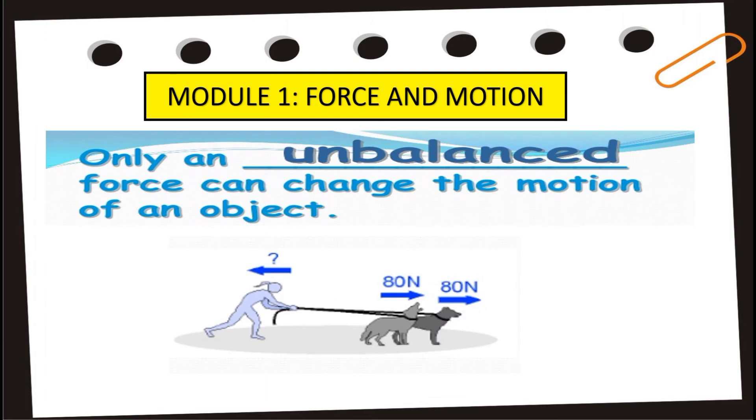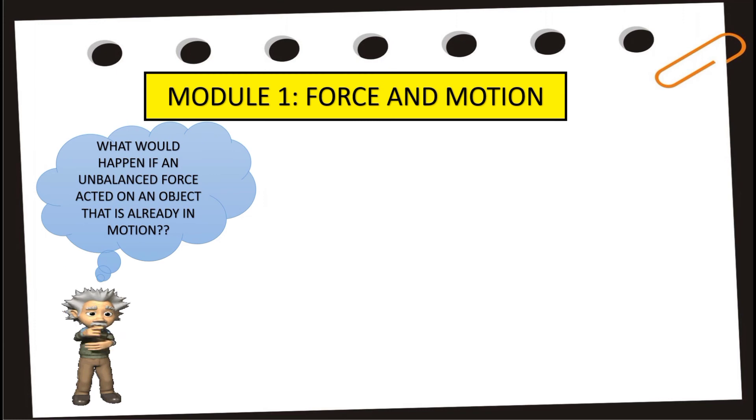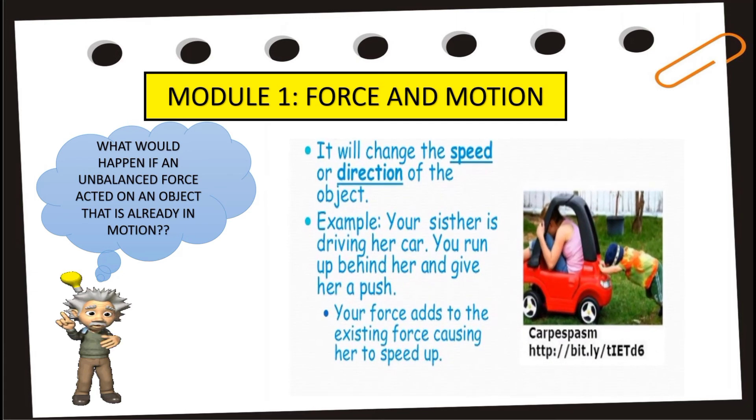Also, only an unbalanced force can change the motion of an object. For example, your dog can cause you to move if it pulls with enough force. Because his force is greater than the force you're using to stay in place. What would happen if an unbalanced force acted on an object that is already in motion? Simply, it may result to change of the speed or direction of an object.